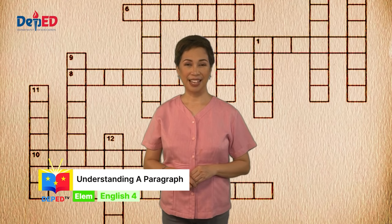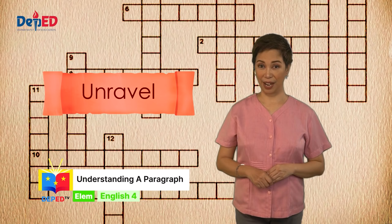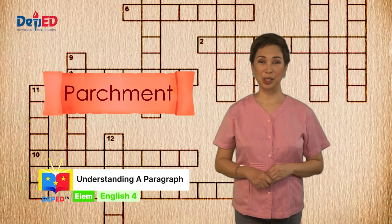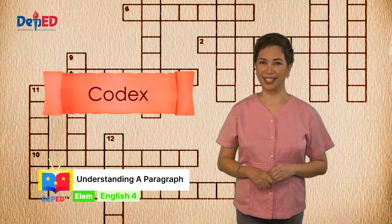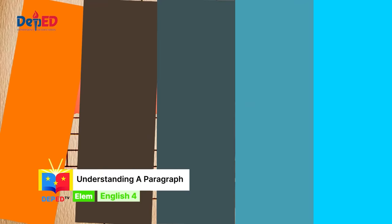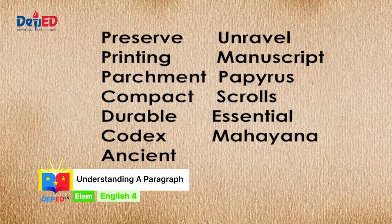Do you have what it takes to be a word master? These are the words: preserve, unravel, printing, manuscript, parchment, papyrus, compact, scrolls, durable, essential, codex, Mahayana, ancient. All you have to do is select the word that is being described. Don't worry because I will be giving you examples of the words used in a sentence. Are you ready? Here are the clues.